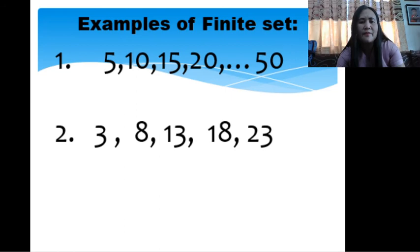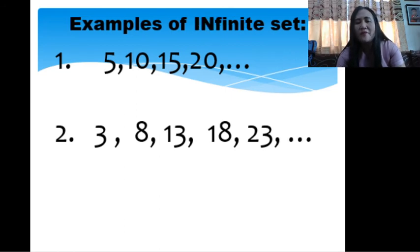Then the other one is infinite. So we have here 5, 10, 15, 20, and then you have here an ellipses. We do not know your last term. So it is an infinite set. Same through with the second example: 3, 8, 13, 18, 23. It is an example of an infinite set.